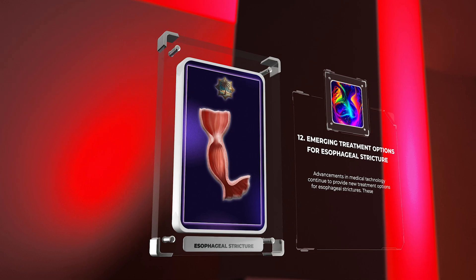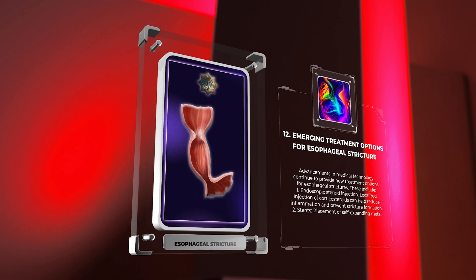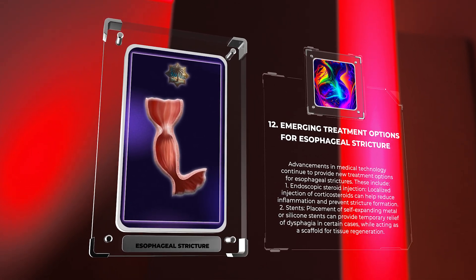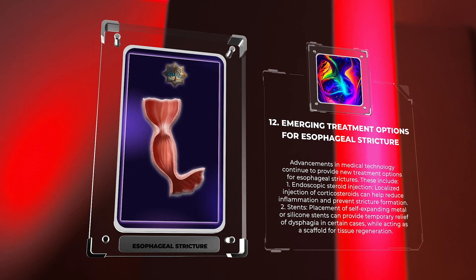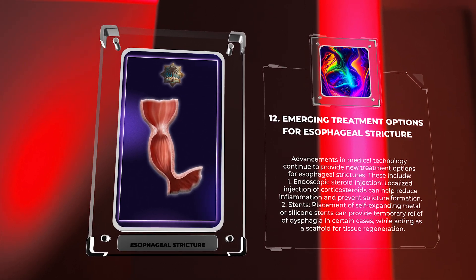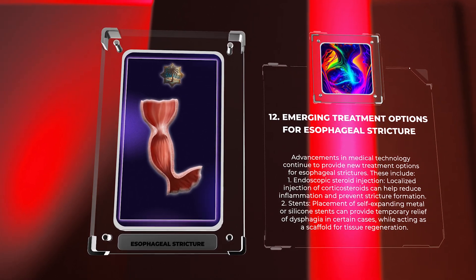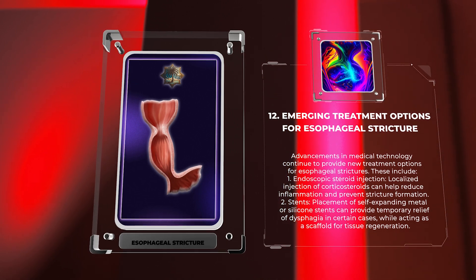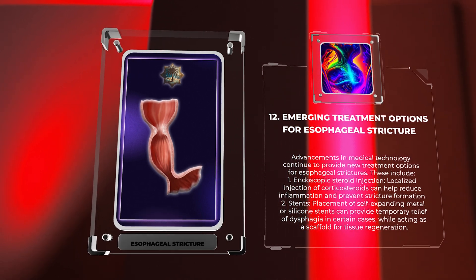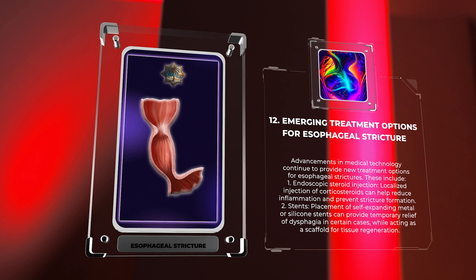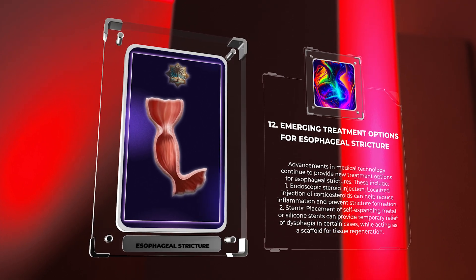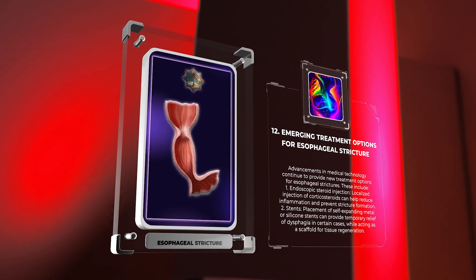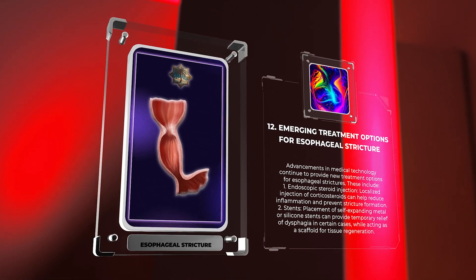Advancements in medical technology continue to provide new treatment options for esophageal strictures. These include: 1. Endoscopic steroid injection — localized injection of corticosteroids can help reduce inflammation and prevent stricture formation. 2. Stents — placement of self-expanding metal or silicone stents can provide temporary relief of dysphagia in certain cases, while acting as a scaffold for tissue regeneration.